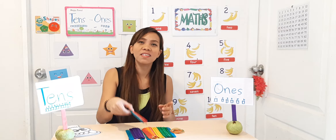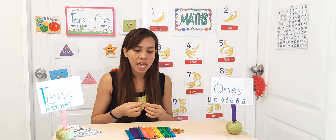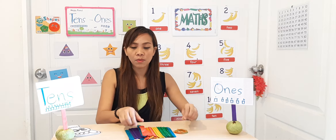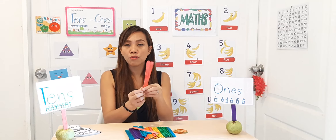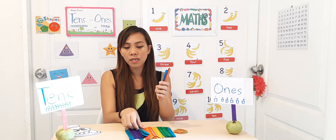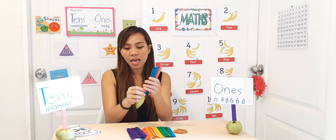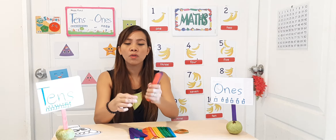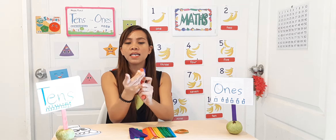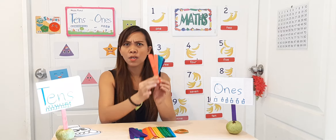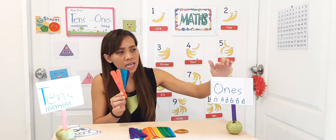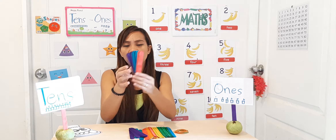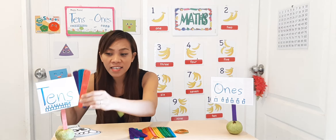Miss Jen has some popsicle sticks here. Please help me count from one to ten. I have some popsicle sticks and rubber bands. Let's count: 1, 2, 3, 4, 5, 6, 7, 8, 9, 10. I have ten popsicle sticks — we're going to tie it. So this is my first set of ten. Where will I put this — in ones or in tens? I have one ten, so I put it in the tens column.